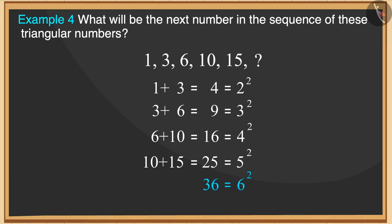This means the sum of the number 15 and the next triangular number must also be 36. Thus, we get the next triangular number as 21. Hence, the next triangular number is 21.